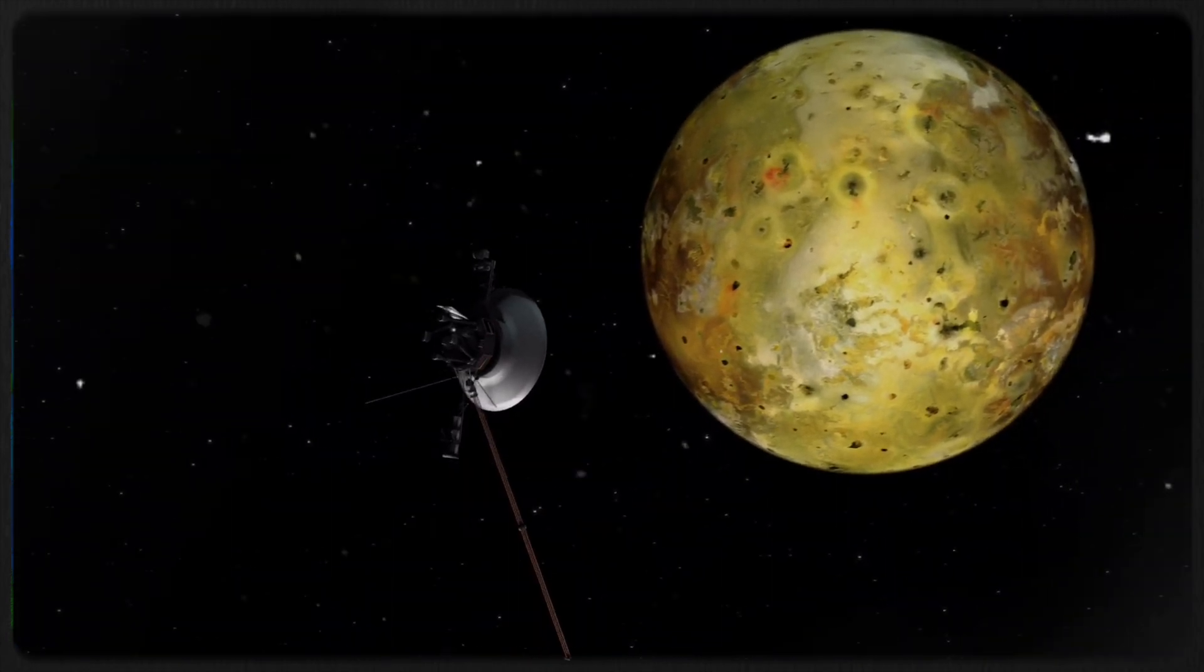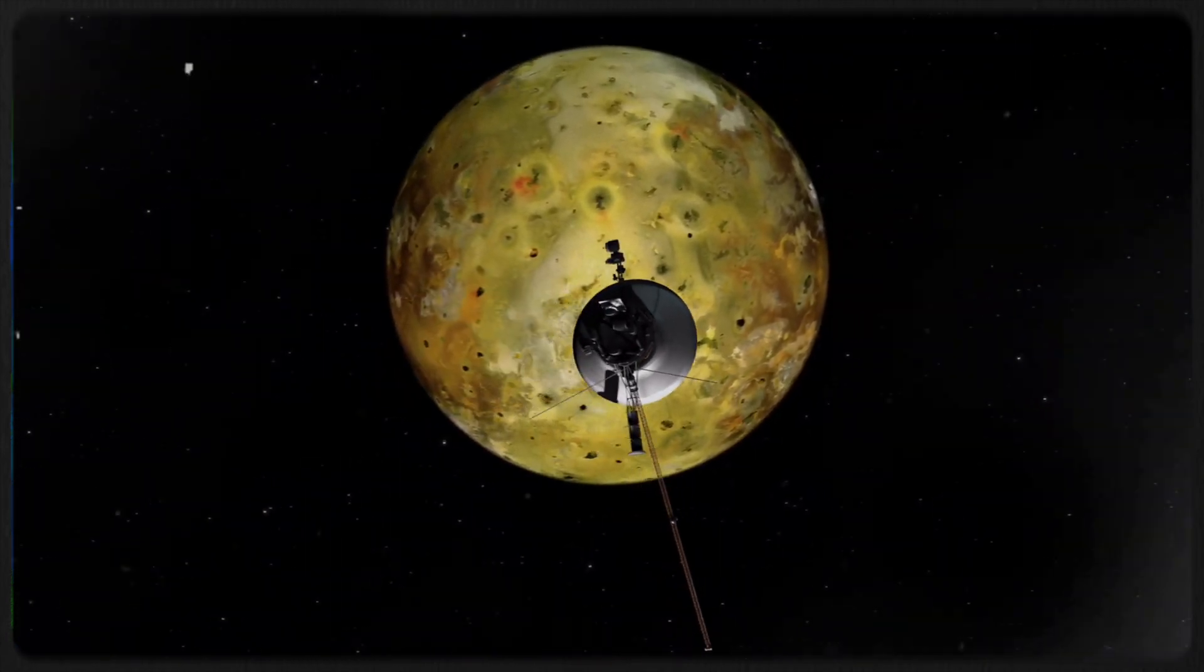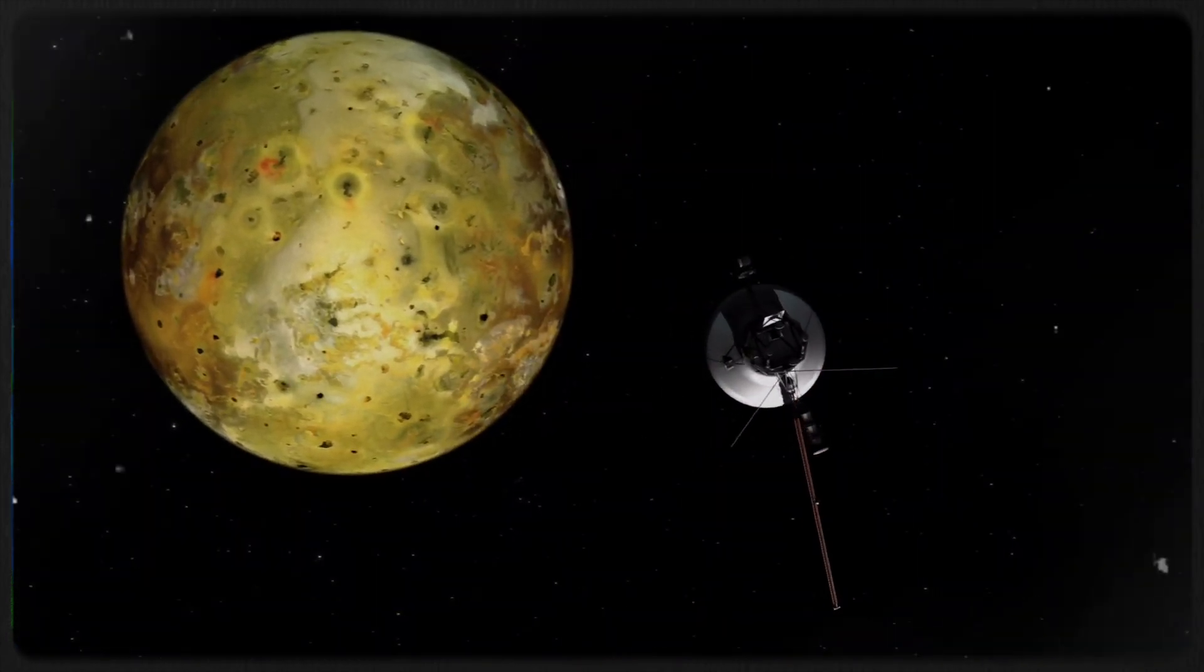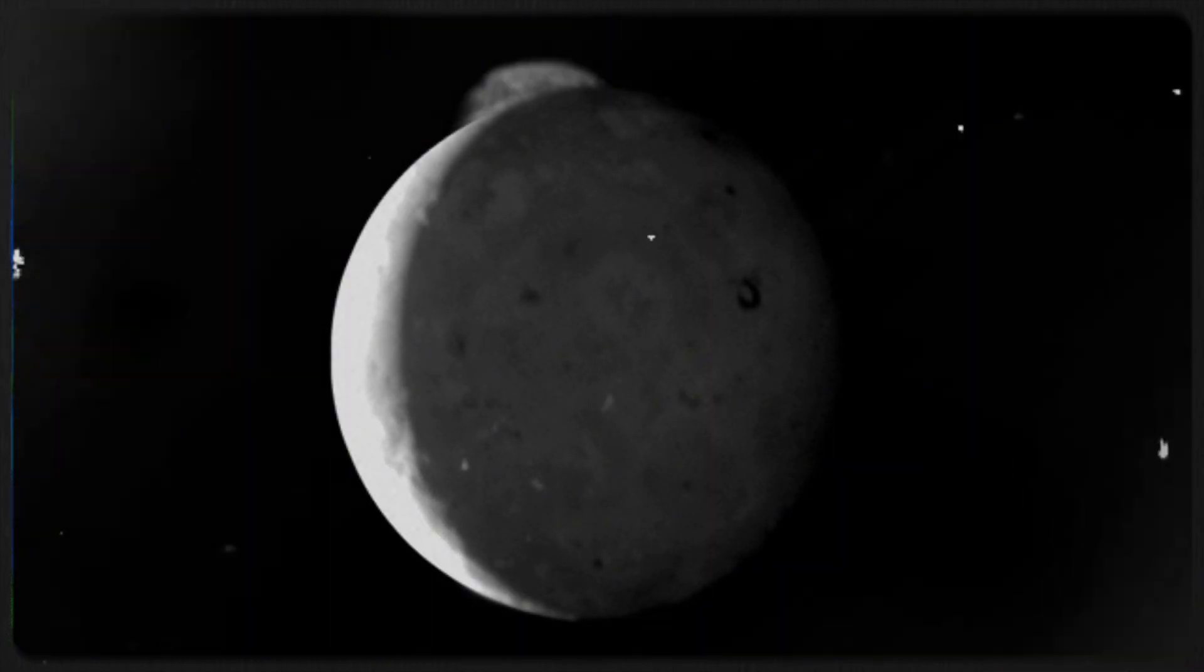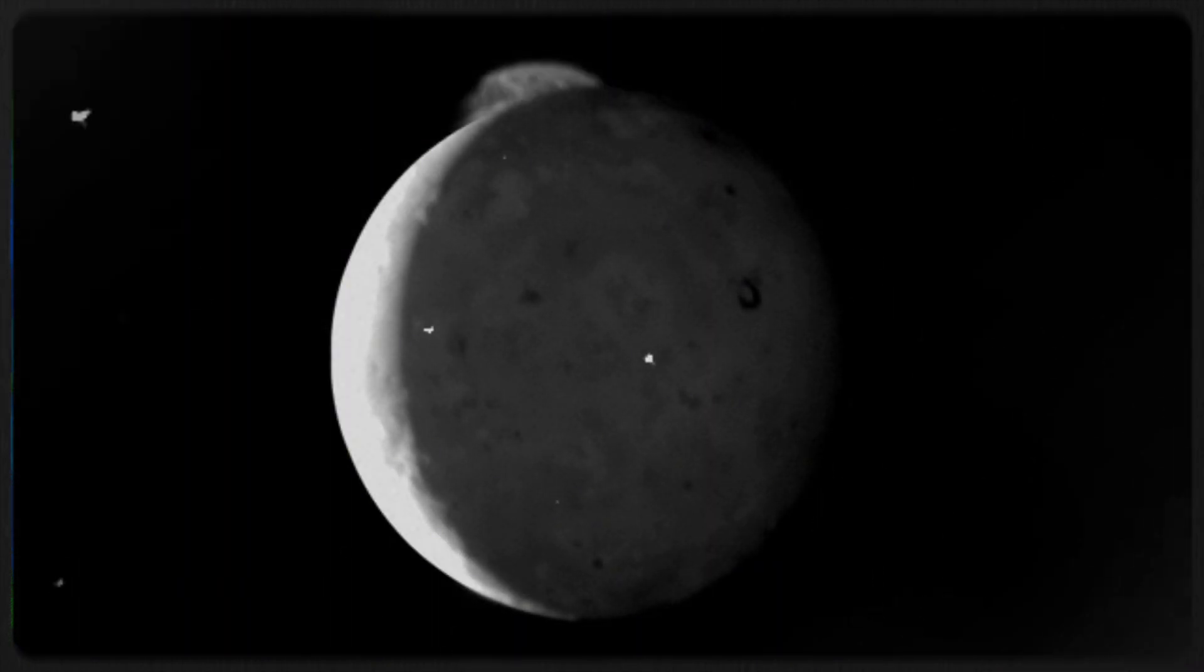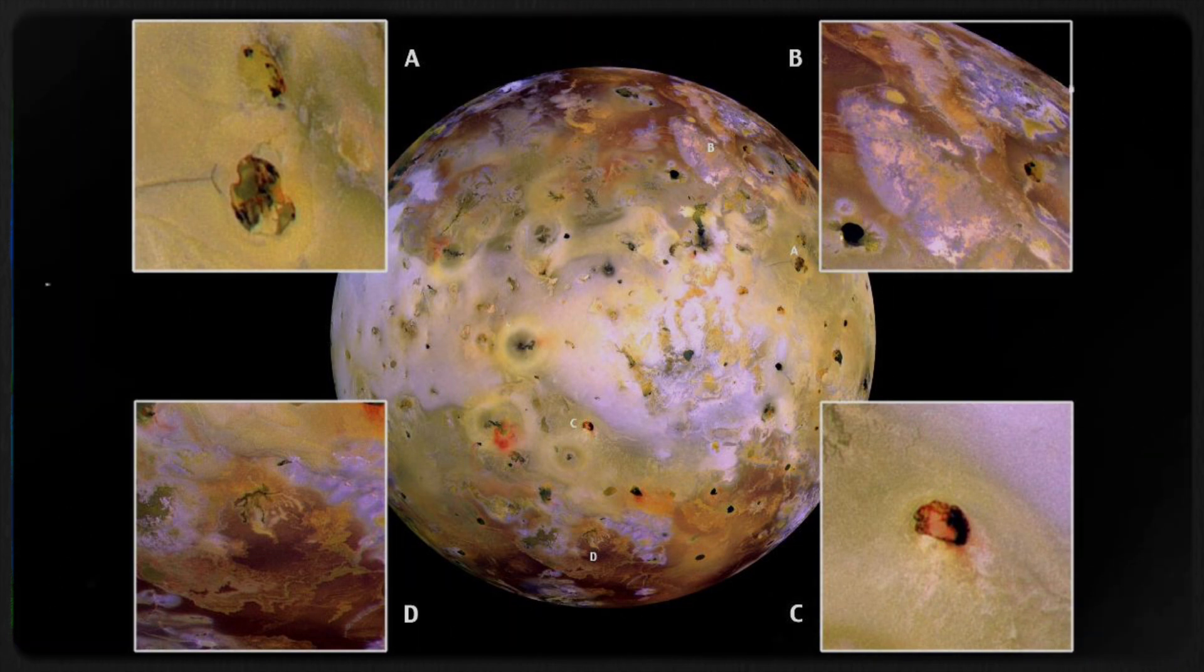Voyager's cameras later revealed that Io had active volcanoes. This small moon, slightly larger than Earth's moon, is now known to be the most volcanically active body in the solar system.